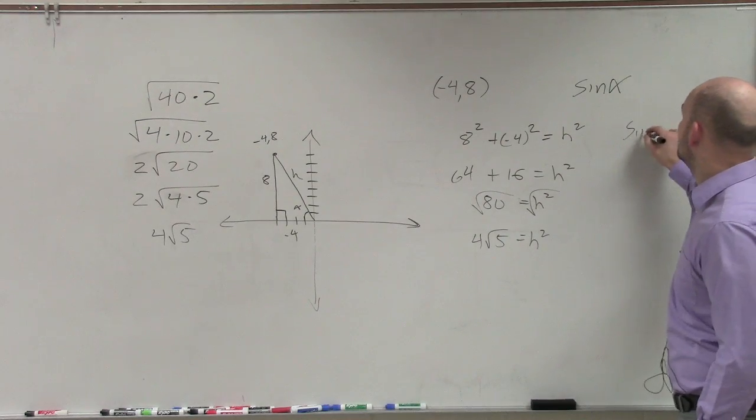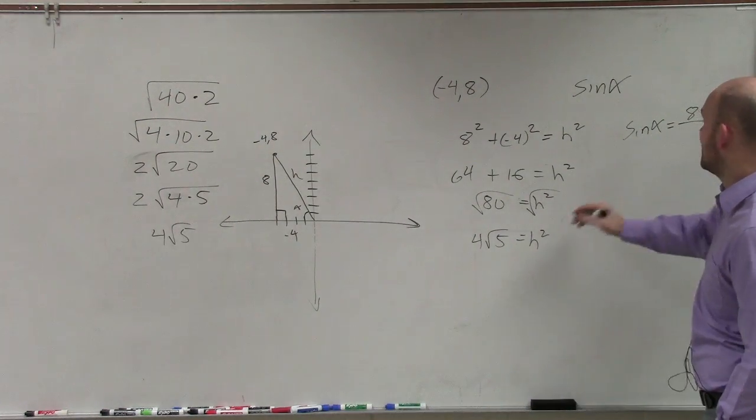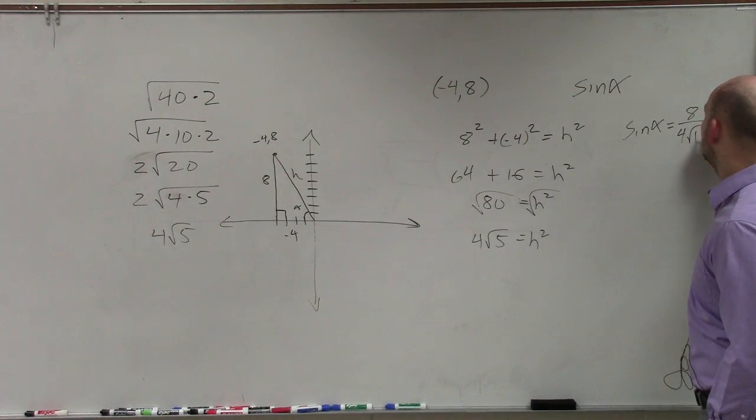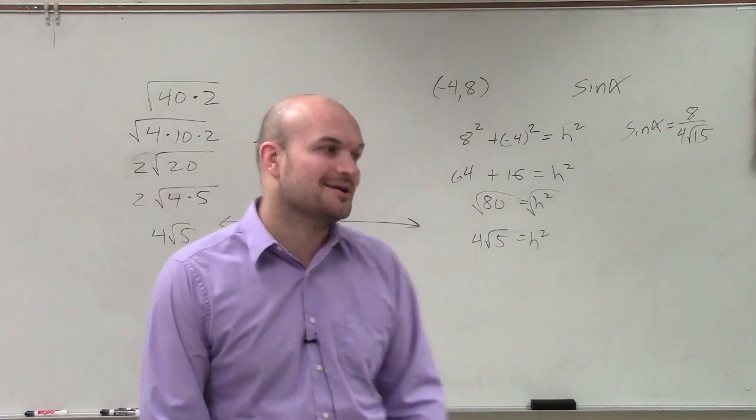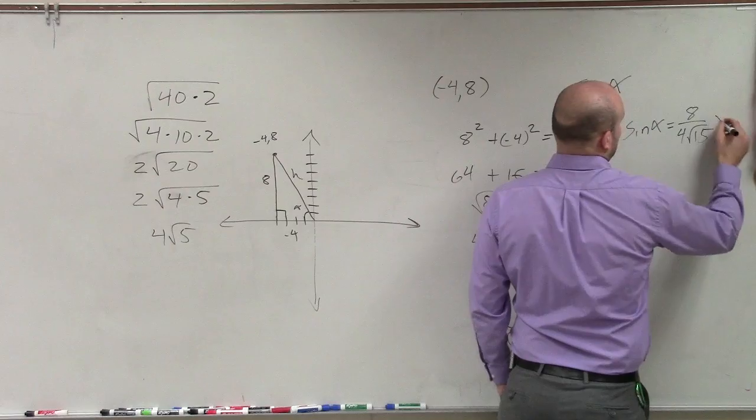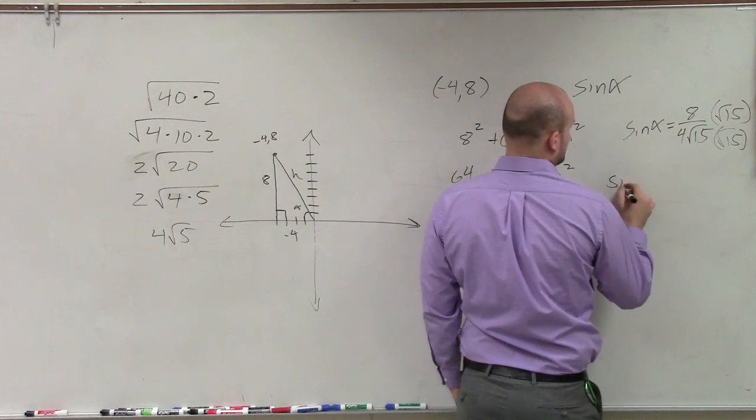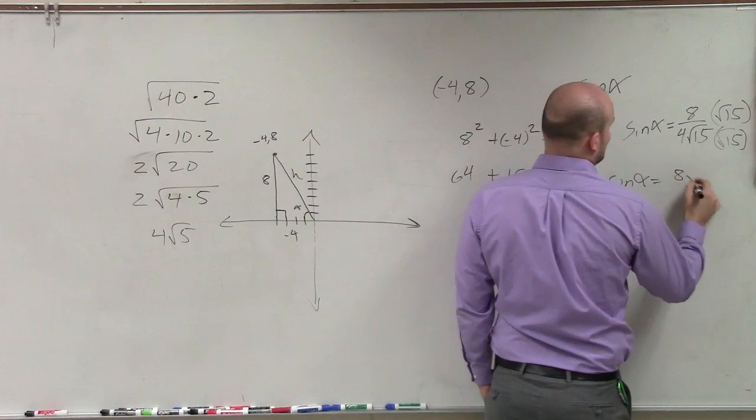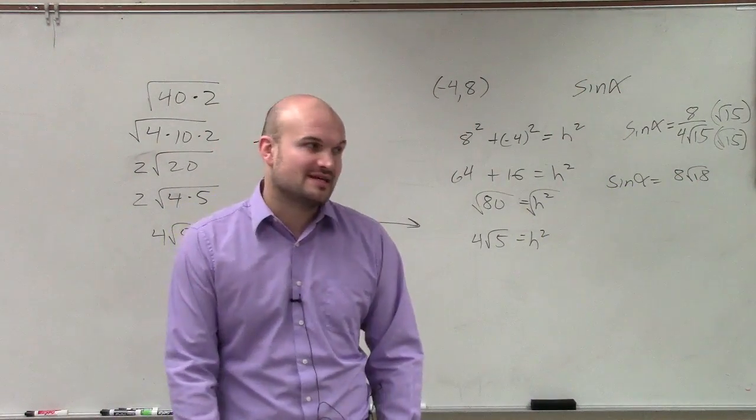Well, they're saying sine of alpha. Sine of alpha is equal to opposite, which is 8, over your hypotenuse, 4 square root of 5. However, you know that the final answer on your exam is not going to have a radical on the bottom, so you rationalize the denominator. So therefore, you have sine of alpha equals 8 times the square root of 5. And the square root of 5 times the square root of 5 is 5.